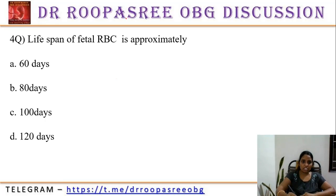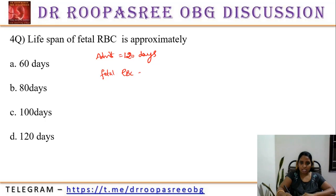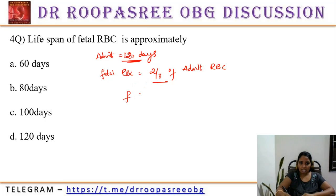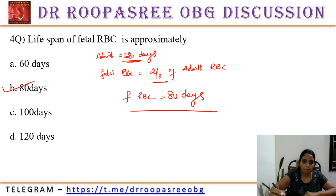The lifespan of fetal RBC: adult RBC is 120 days, and fetal RBC is two-thirds of adult RBC. Therefore fetal RBC lifespan is 80 days. The answer is option D.